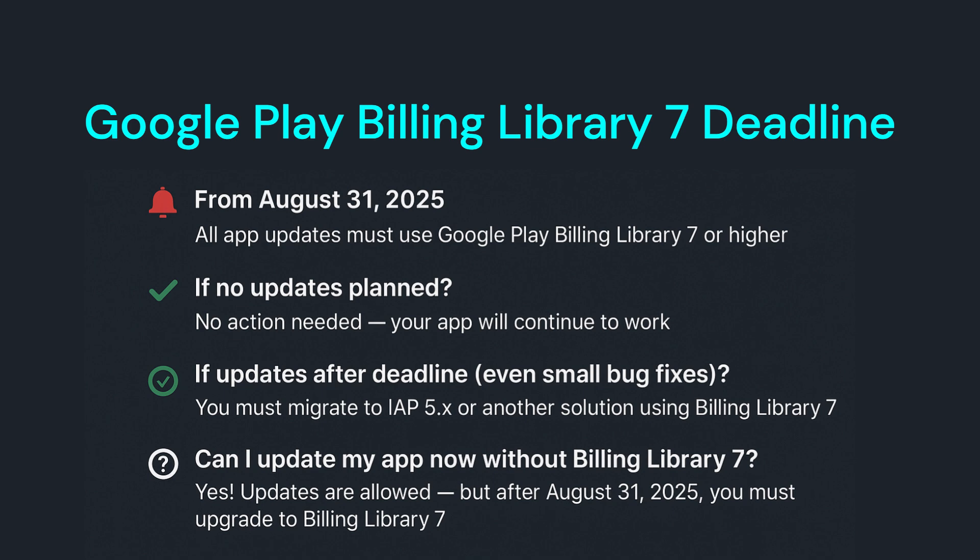This means if you don't plan to update your app, you don't need to do anything right now. But if you want to release updates — even small bug fixes — after that date, you'll need to migrate to IAP 5.x or another solution that uses Billing Library 7. If you want to update your app now without Billing Library 7, is it possible?